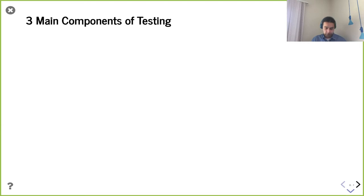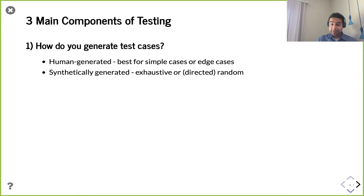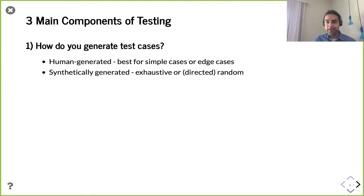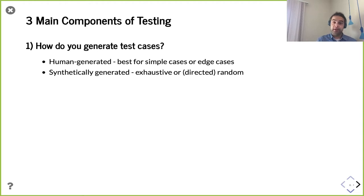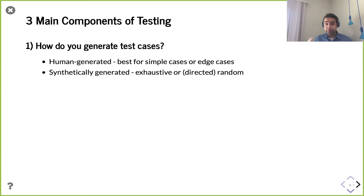When it comes down to testing, you need three things. Number one, you need test cases. How are you going to generate those? Your first test cases you'll probably write manually — that's not too bad for a hello-world test. You can also use your knowledge of the module to know where you really want to make sure you test. Other times you want to use automatically generated tests — you can do exhaustive testing, test every possible option, or use randomized testing or directed random tests.